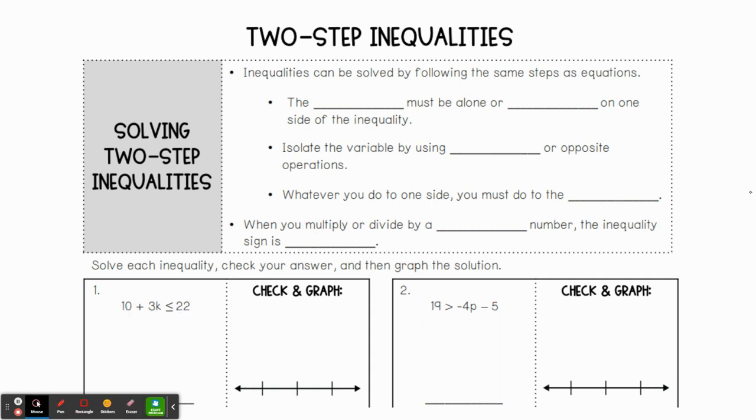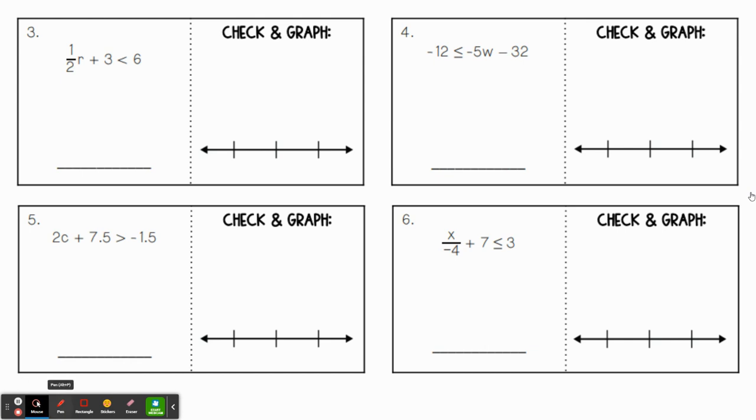All right, let's move on here. We've got a few more problems to do. 1 half r plus 3 is less than 6. Remember, our goal is to get the variable by itself. So the first thing we need to do is get rid of this 3. How do we do that? We use inverse operations to undo addition. So let's go ahead and subtract. This cancels out. We're left with 1 half r is less than 3.